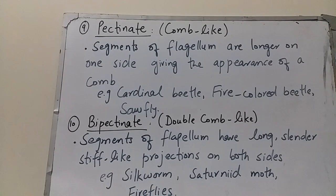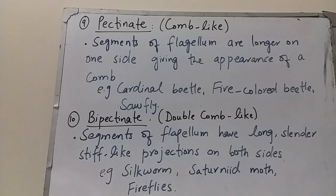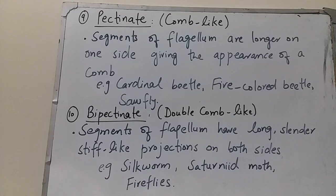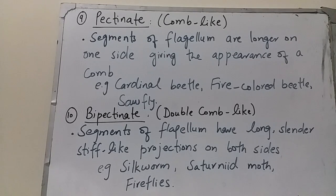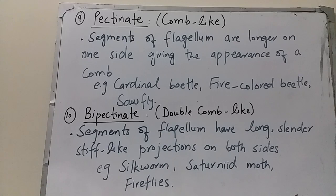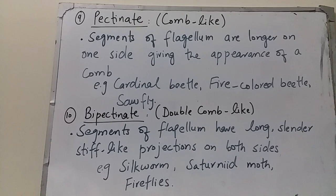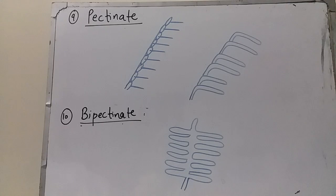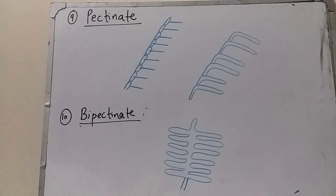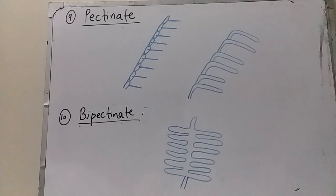The next type is bipectinate antenna, meaning double comb-like. In bipectinate antennae, the segments of the flagellum have long, slender, stiff-like projections on both sides, giving the appearance of a double comb. Bipectinate antennae are present in silkworms, saturnid moths, and fireflies. In pectinate, projections are on one side; in bipectinate, they are on both sides of the flagellum.